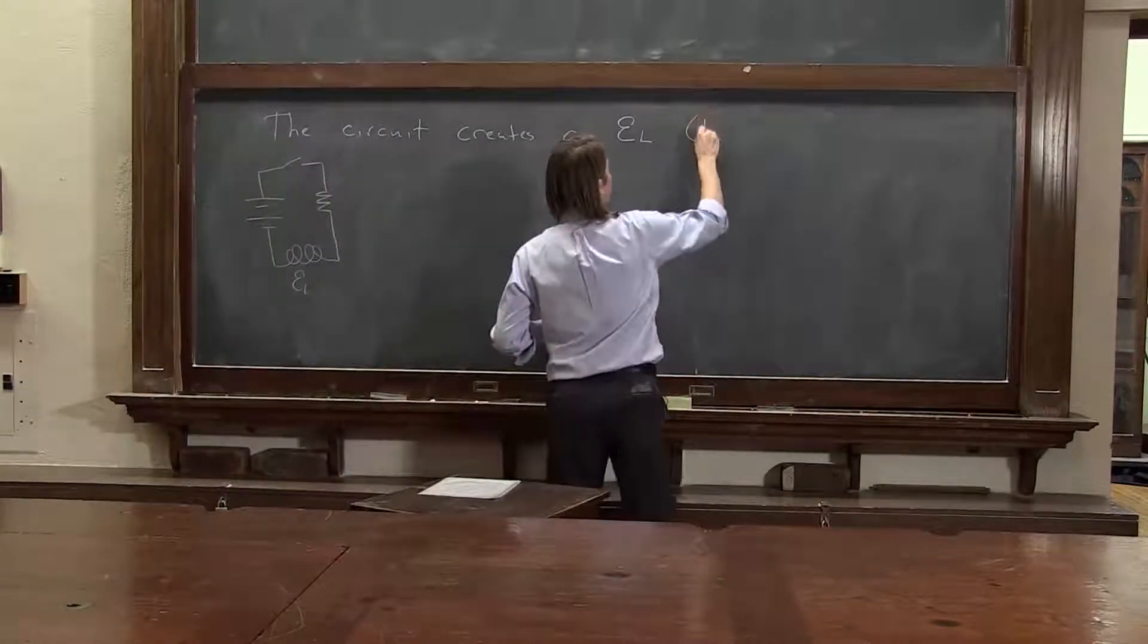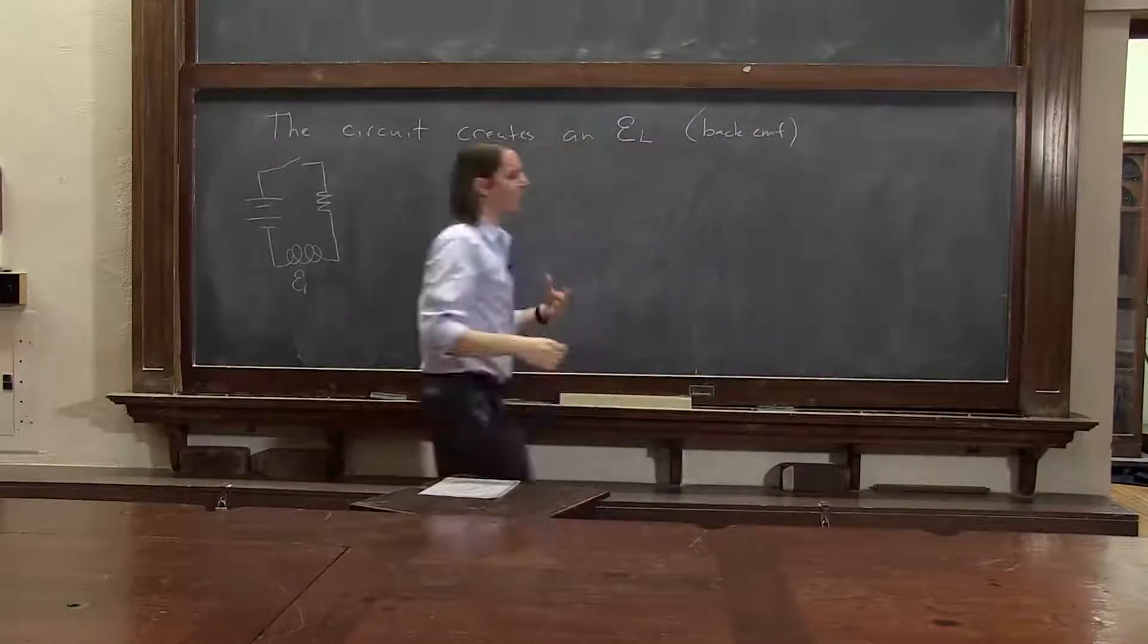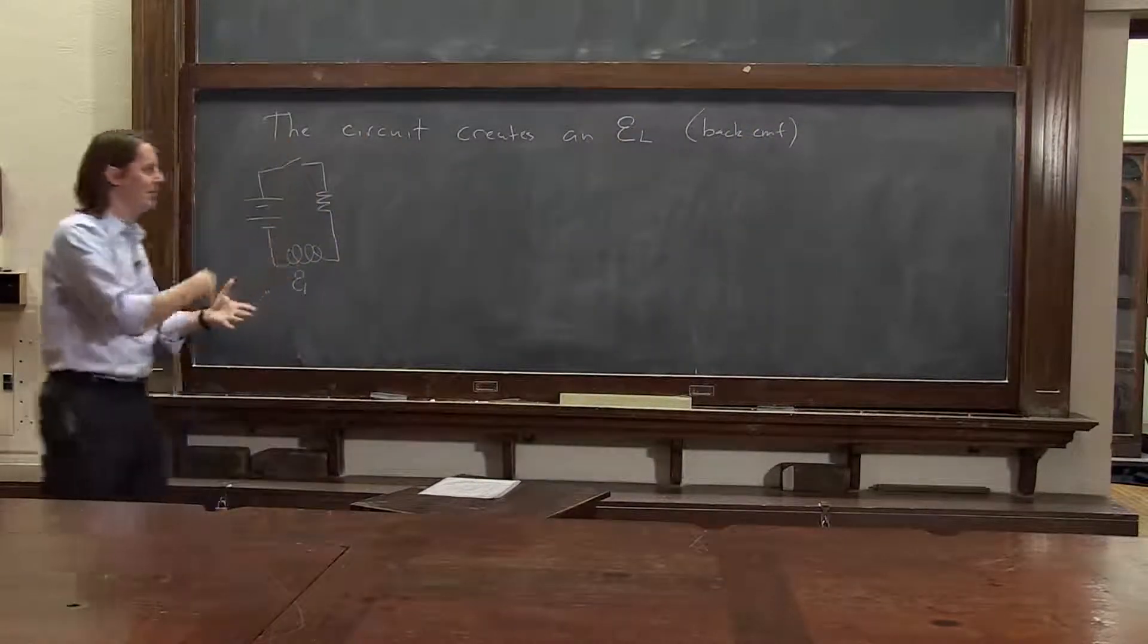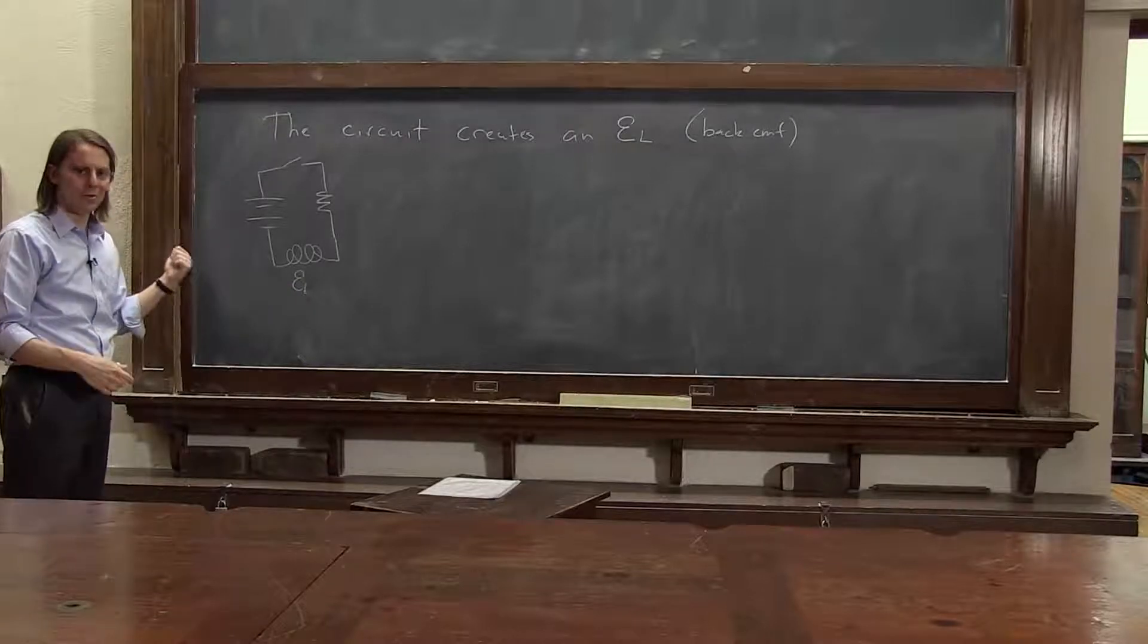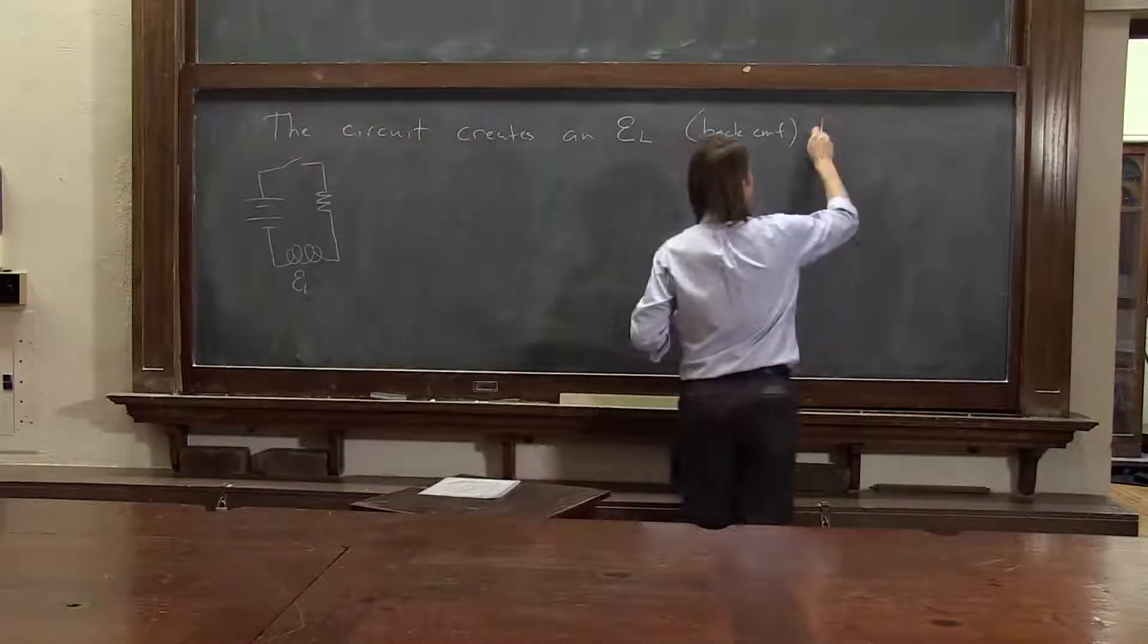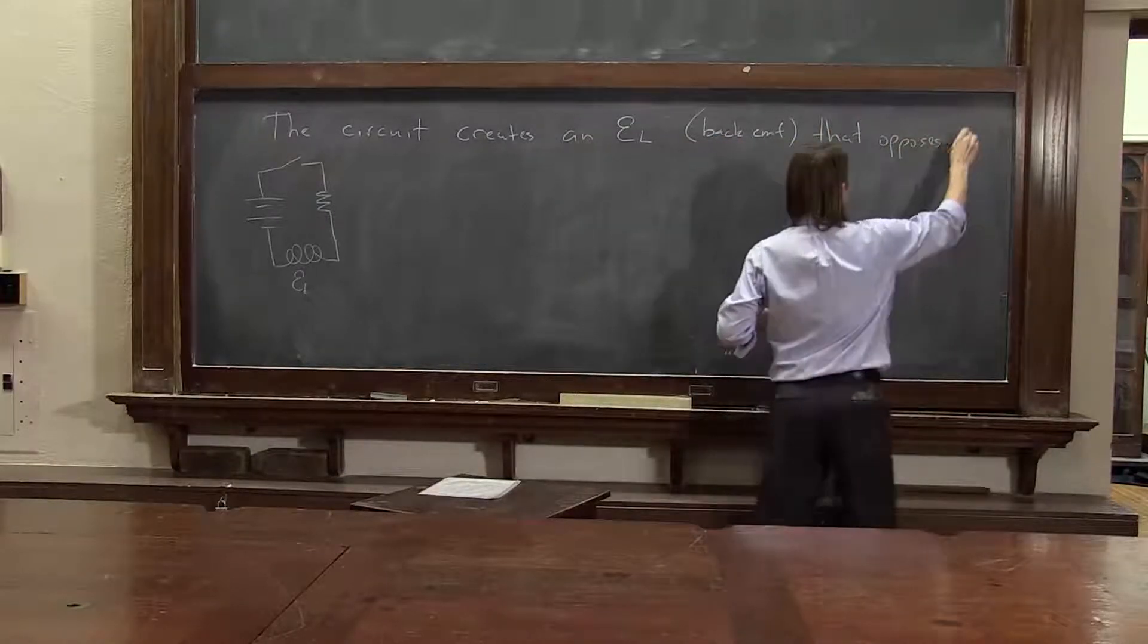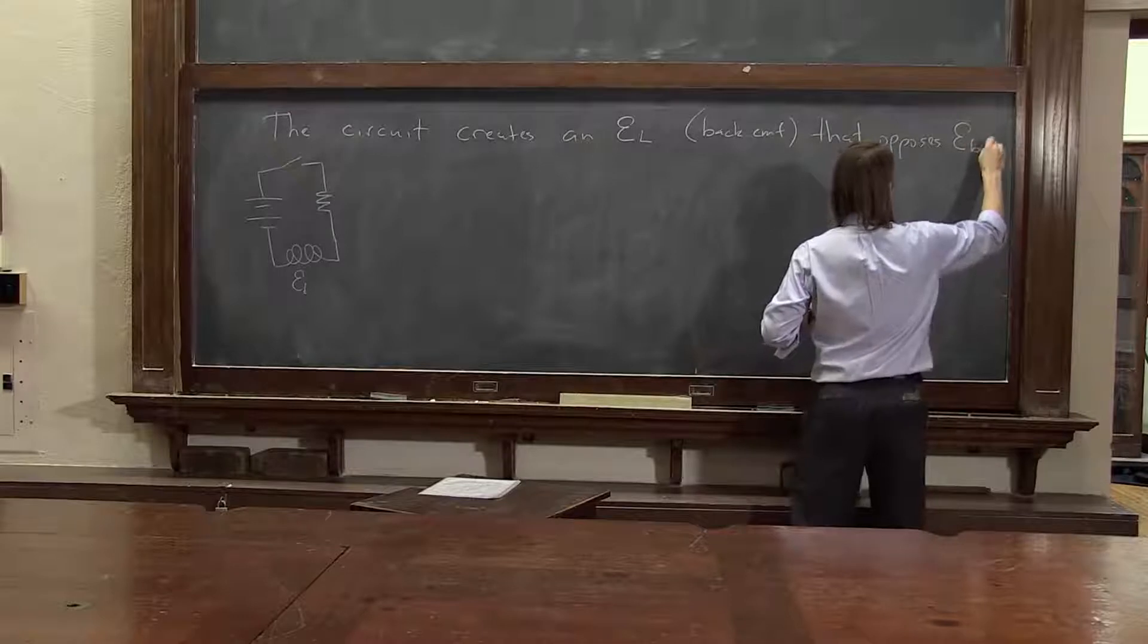It's called a back EMF. When something creates a potential back against the potential that started the current to flow in the first place, that's a back EMF. EMF that opposes EBAT.